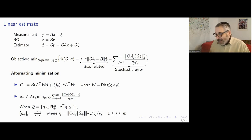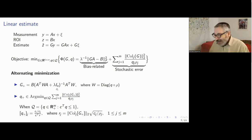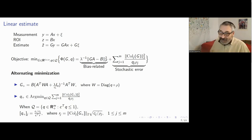Since we estimate Bx rather than x, we multiply the result by matrix B from the left. The bias-related term contributes a regularization term of lambda times the identity matrix. This is a general notion that may be easily generalized further: instead of the identity matrix, one can use a term responsible for the squared norm of first or second derivatives of the image.